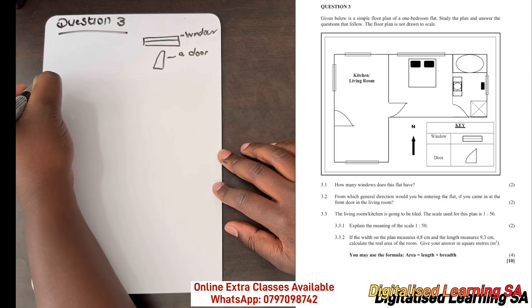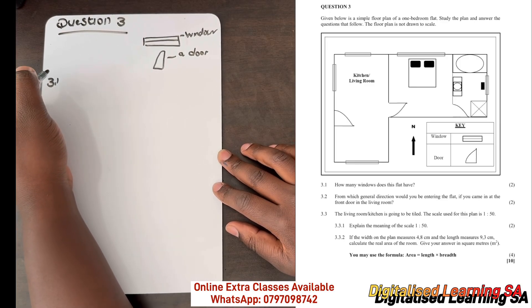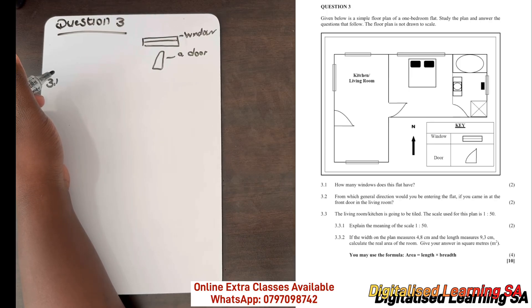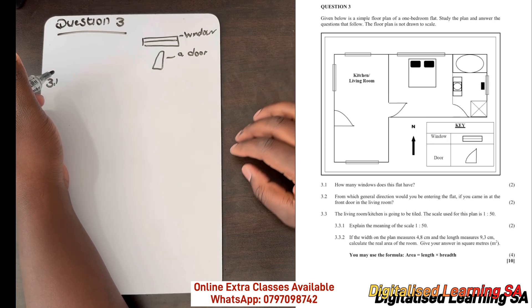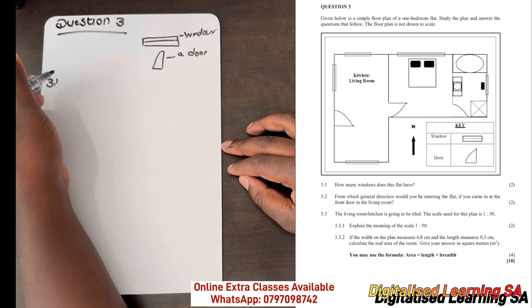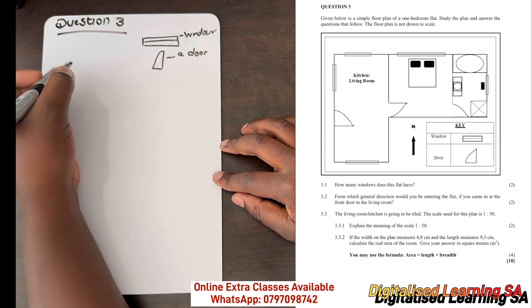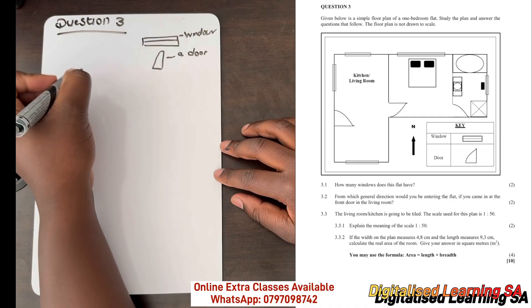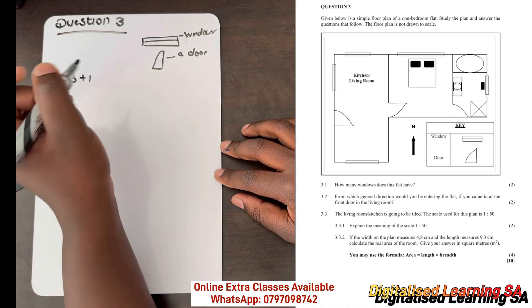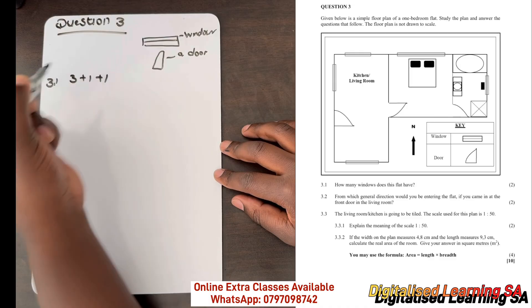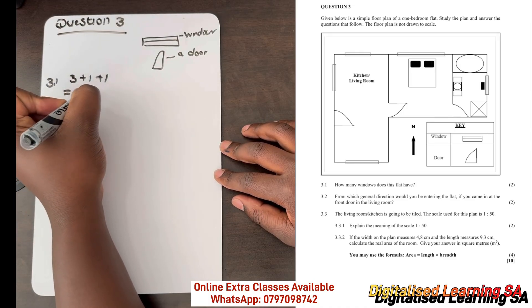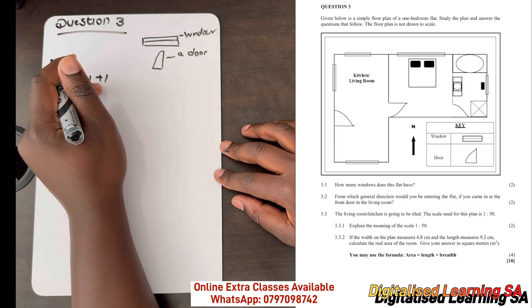Question 3.1 says: how many windows does this flat have? If we check in our kitchen or living room, we can see that there are three windows. Then in the bedroom we can see that there is a window, and in the bathroom again we can see that there is a window.